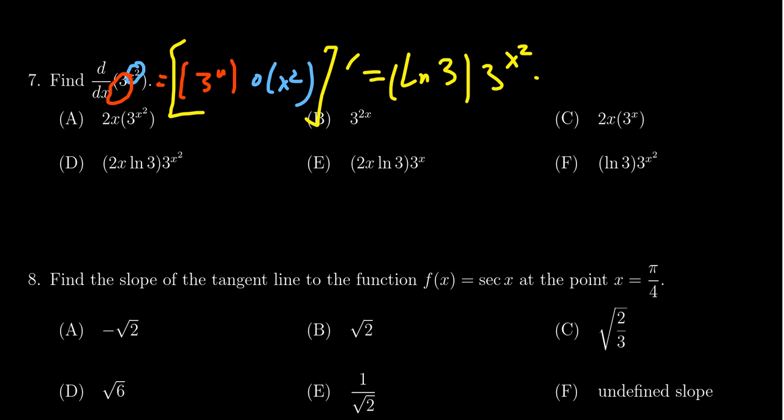And then you need to multiply that by the inner derivative. So we have to take the derivative of x squared, which we know is just going to be 2x.